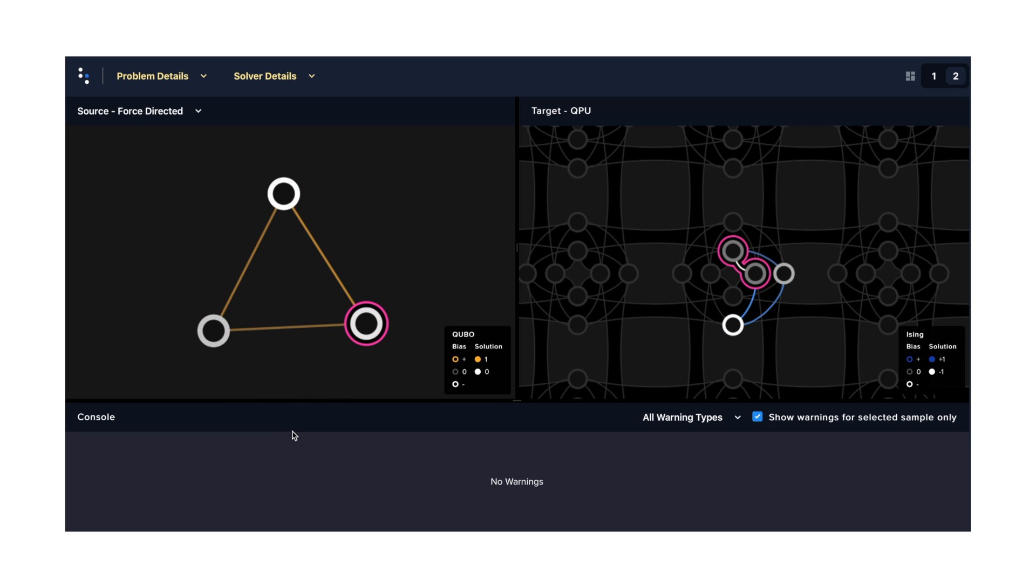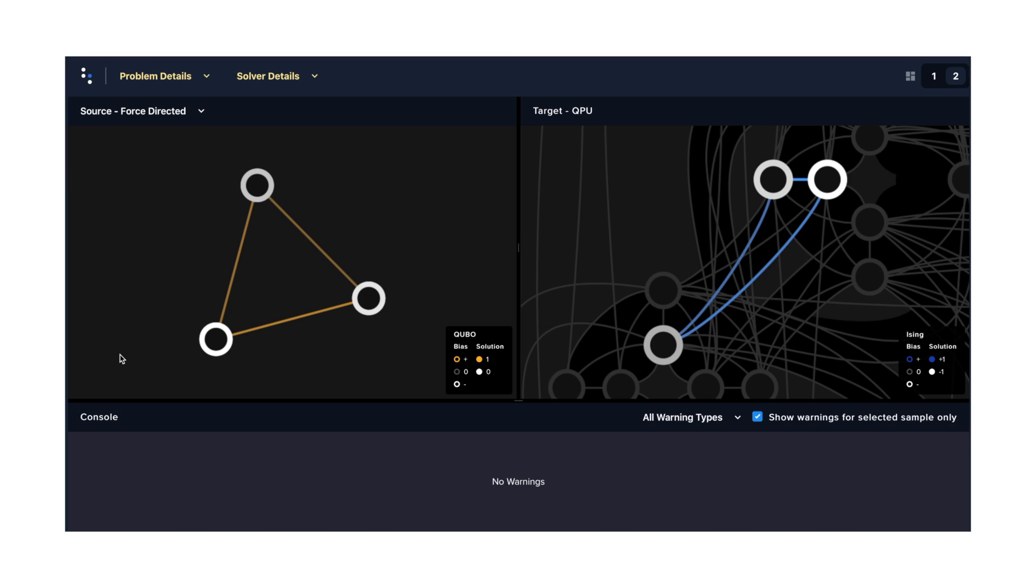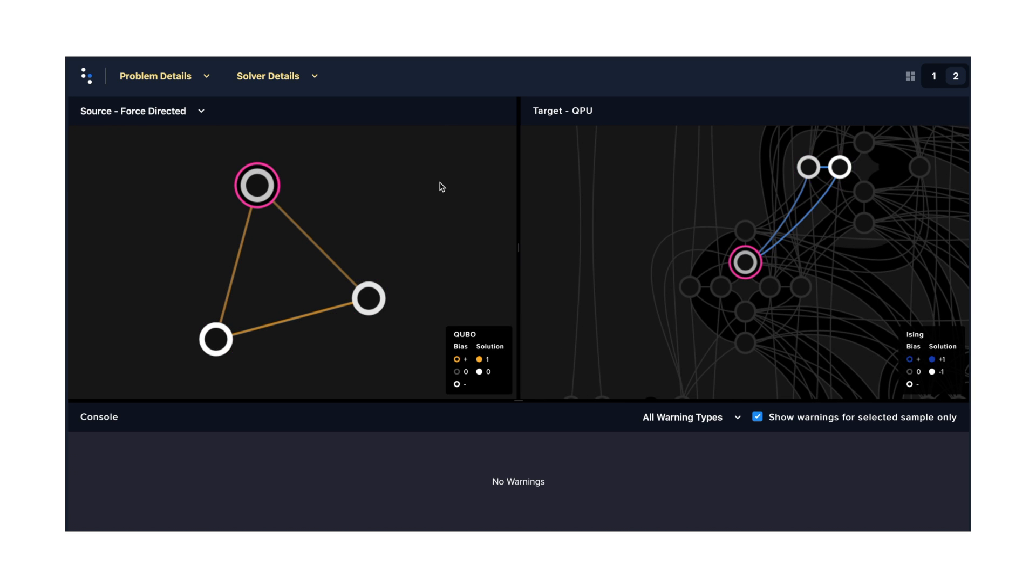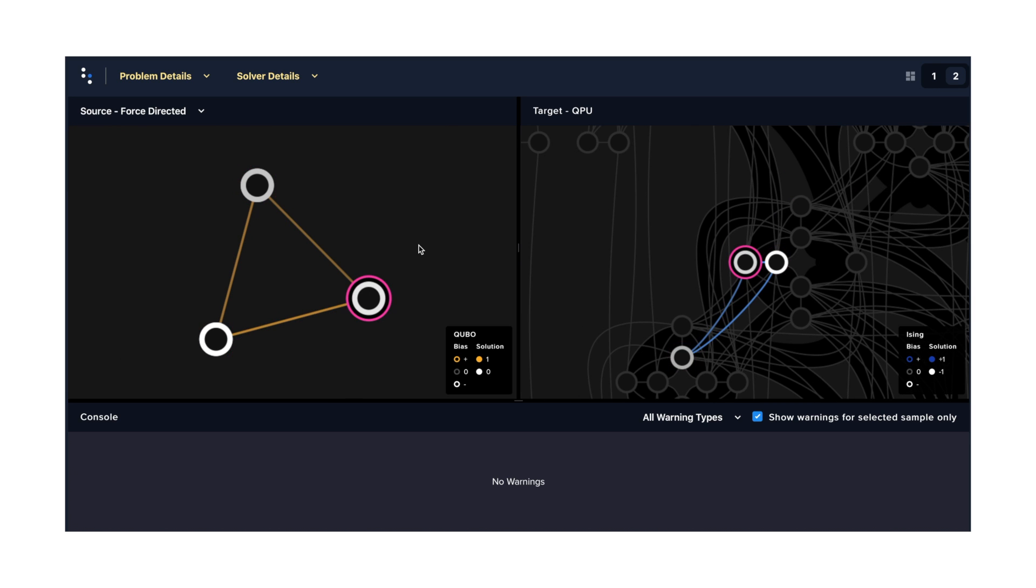On the left, you see the graph of our QUBO problem with three variables, and on the right is our embedded problem that uses four qubits. Note that with our new advantage quantum processor, we're able to run problems like this one without using extra qubits. We're using the older processor here so that we can demonstrate these concepts with a small, simple problem.